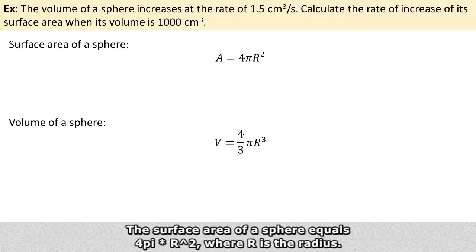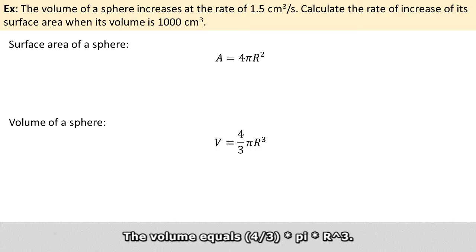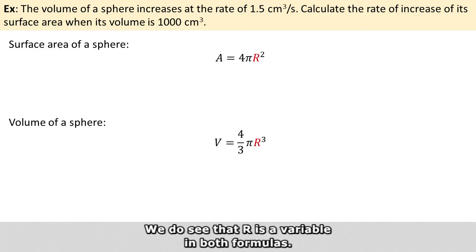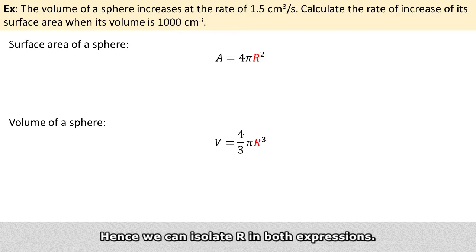The surface area of a sphere equals 4π times r squared, where r is the radius, and the volume equals (4/3)π times r cubed. We see that r is a variable in both formulas, hence we can isolate r in both expressions.